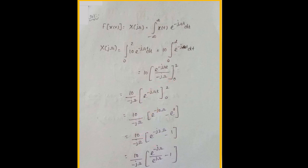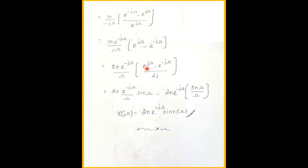Integrating and applying the limits gives 10/(−jω) · [e^(−j2ω) − e^0], which simplifies using Euler's identity to a sinc-type expression. The final answer is X(jω) = 20 · e^(−jω) · sinc(ω), where sinc(ω) = sin(ω)/ω.